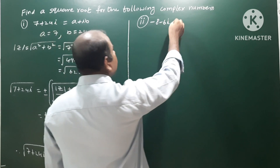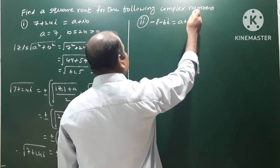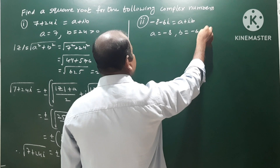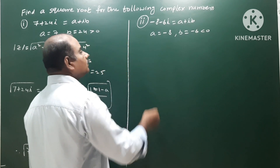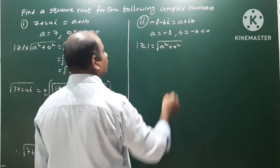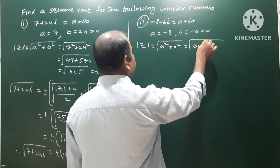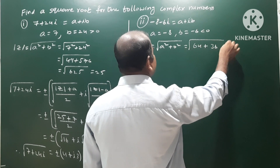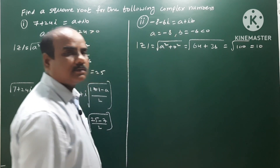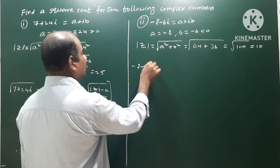Second problem: minus 8 minus 6i. We compare to a plus ib. So a is equal to minus 8, b is equal to minus 6. Since b is less than 0, next we find mod z — the modulus of the complex number — that is root of a squared plus b squared. a squared is minus 8 whole square equals 64, b squared is minus 6 whole square equals 36. So root of 64 plus 36 equals root 100, which is 10. So mod z is 10.